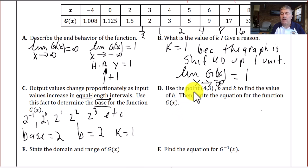We are asked in D to use the point (4,3), b and k that we have from C to find the value of h, then write the equation for the function g of x. So g of x equals b, our base 2, to the x minus h, g of x is our y, or I'll put plus 1. Now we want to use the point (4,3) for x, 4 for x and 3 for y. So we can say 3 equals 2 to the x, or 4 minus h, plus 1.